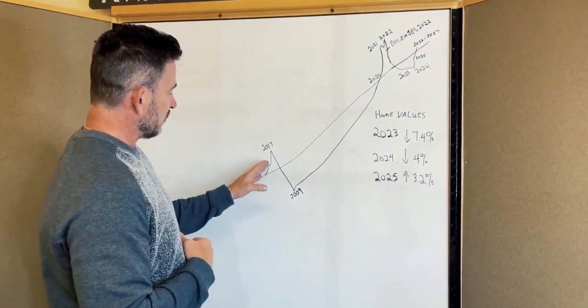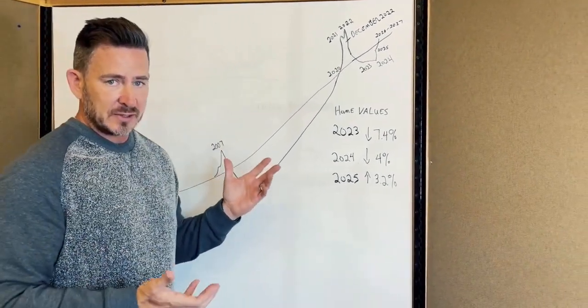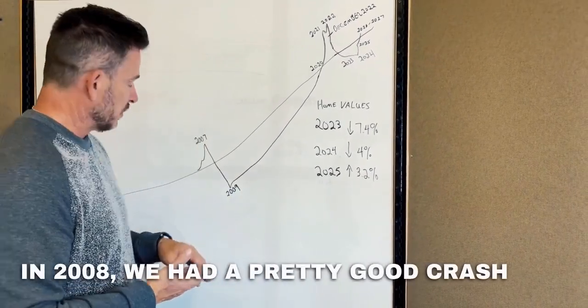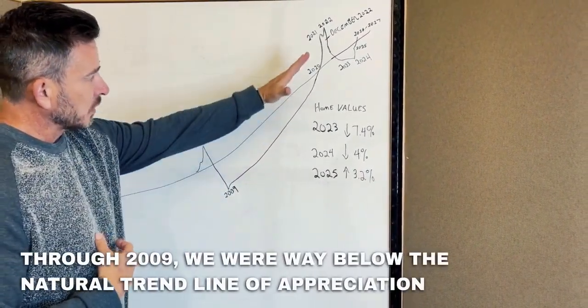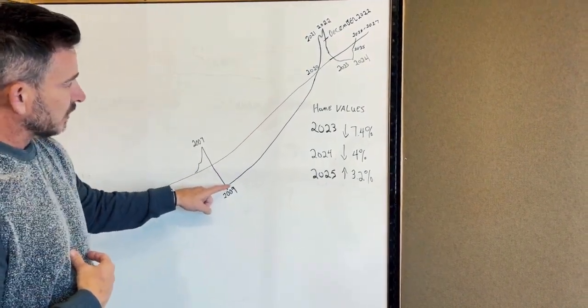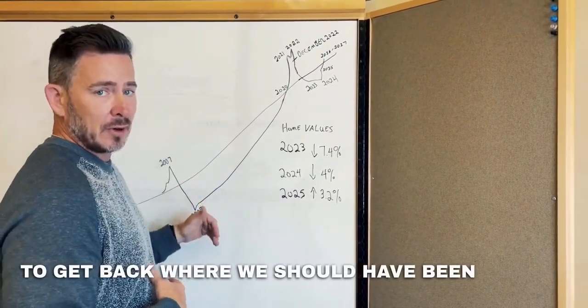when we got to 2005, we had a big jump in 2006. Again, we peaked in 2007, and then we all know in 2008, we had a pretty good crash. And through 2009, we went way below the natural trend line of appreciation, and it took us 11 years to get back to where we should have been without that crash.